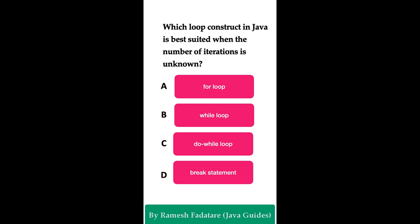The correct answer is Option B: while loop. The while loop is ideal for situations with an unknown number of iterations because it evaluates its condition at the start of each iteration. This makes it flexible for looping until a specific condition is met, without needing to know the exact number of iterations in advance.